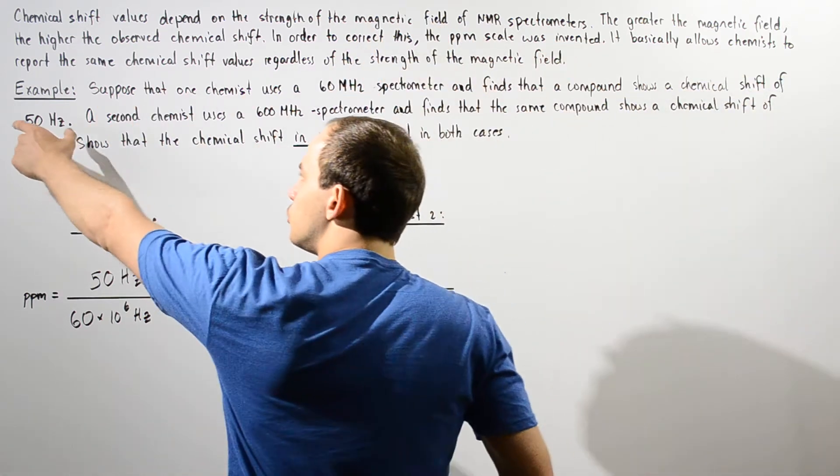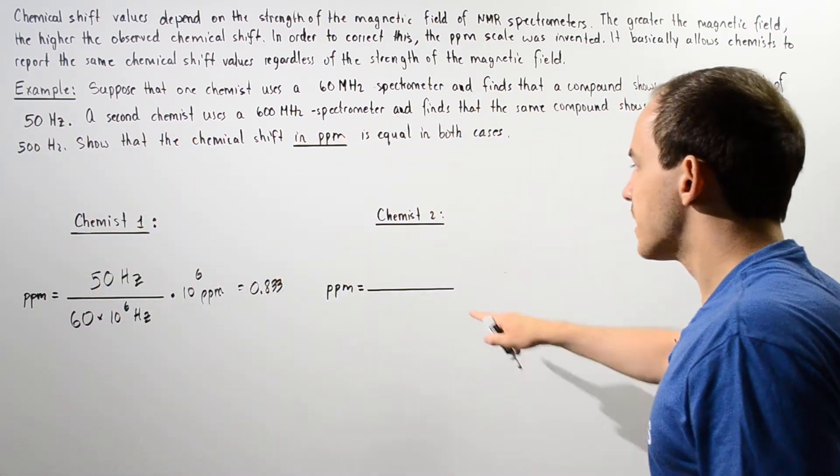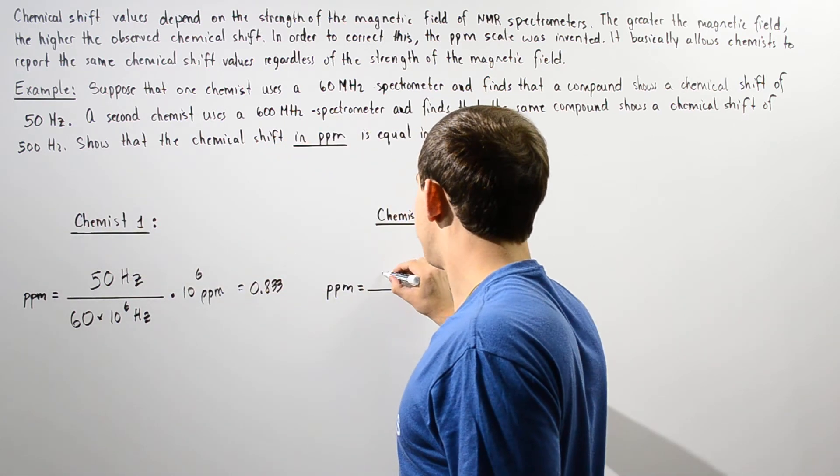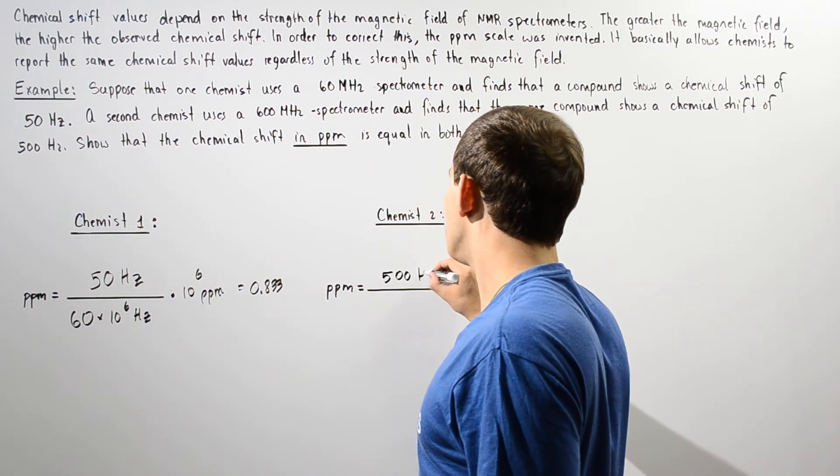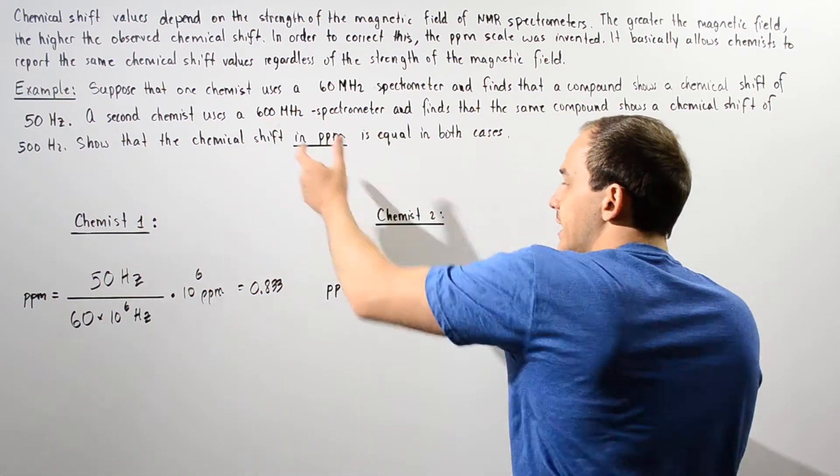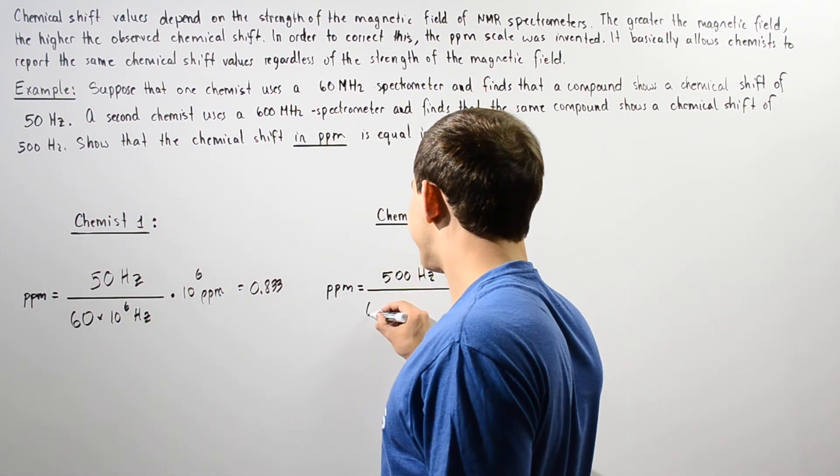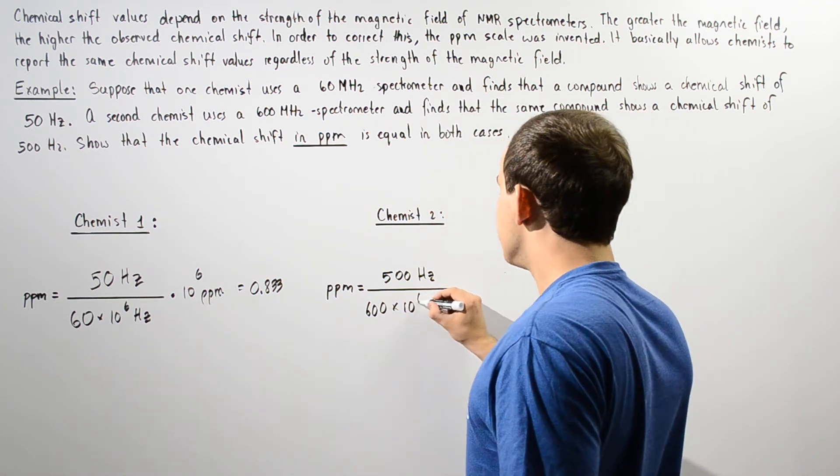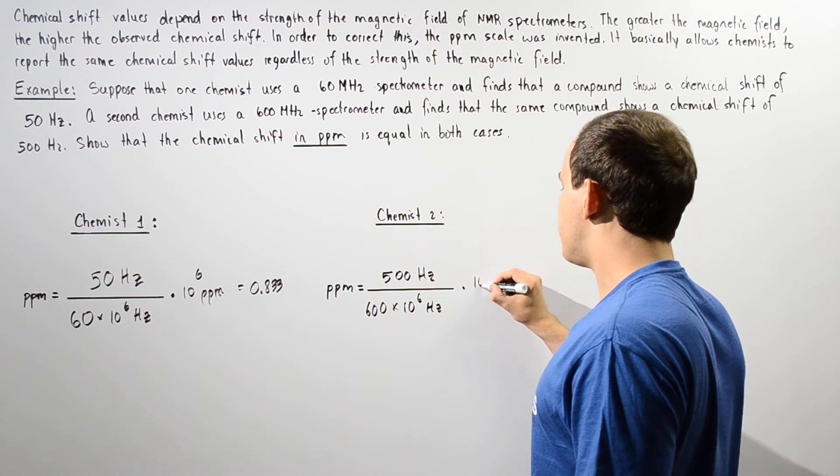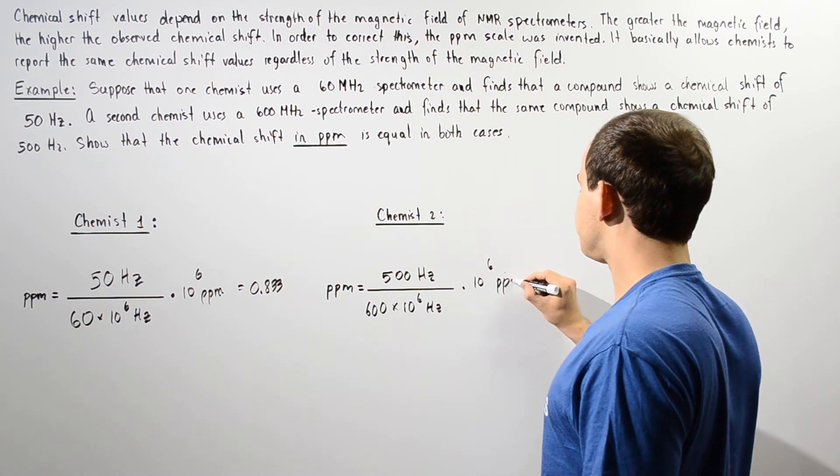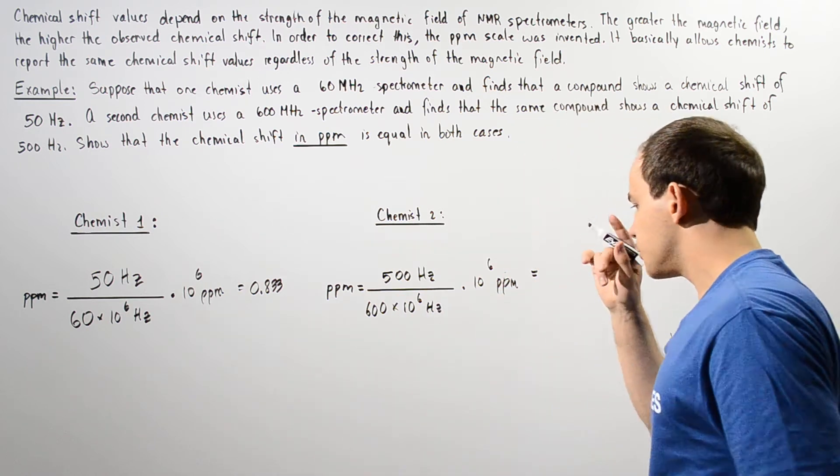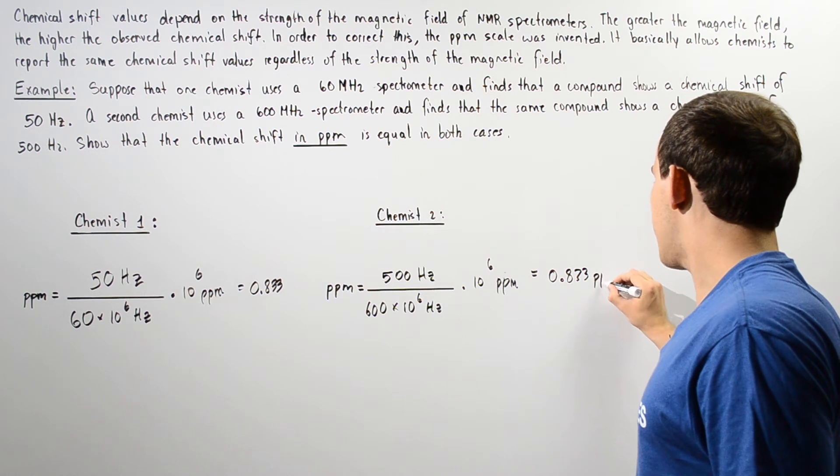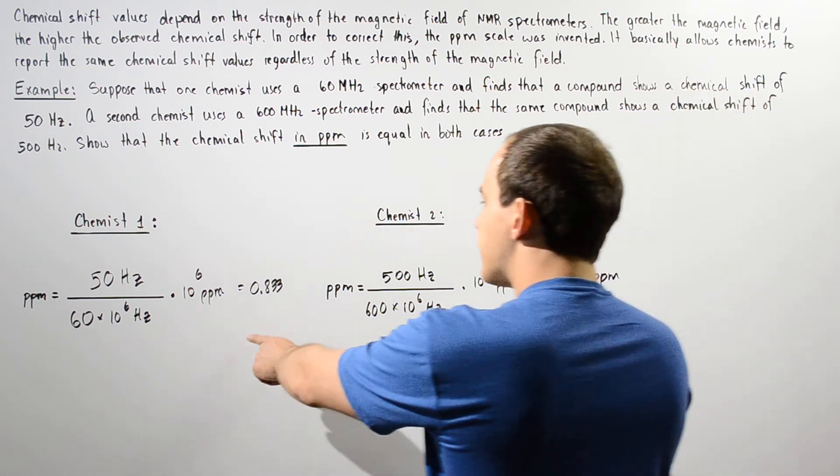Now for the second case, we see that our chemical shift was not 50 but rather 500 hertz. But our frequency rating was not 60 but 600 megahertz, which is equivalent to 600 times 10 to the 6 hertz. Now we multiply this by 10 to the 6 ppm. And if we plug these values into our calculator, we get that it's equal to 8.33 ppm.